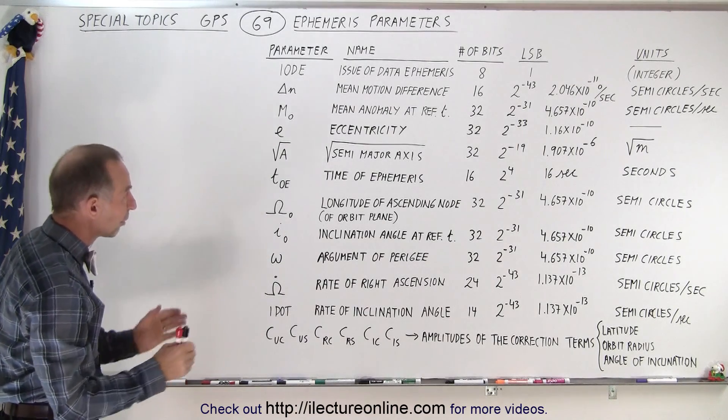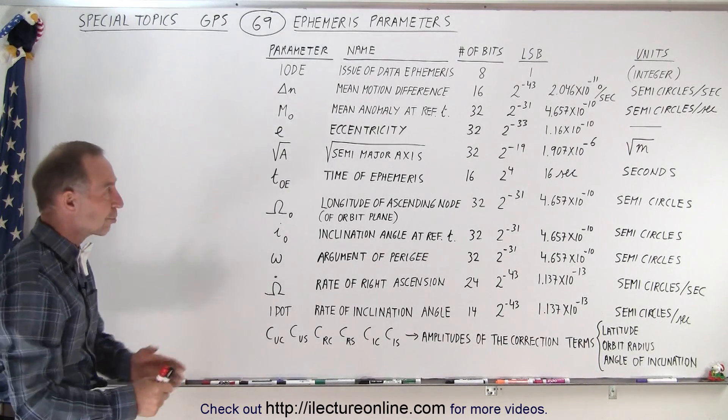We want to be able to very precisely know the difference between the orbit of the satellite which is an ellipse versus what it would be if it was circular. We do want to keep track of that.